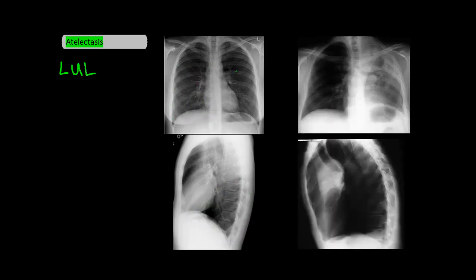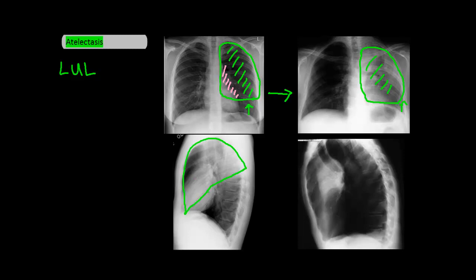Next we have the left upper lobe. On the PA, the normal left upper lobe dimension is here. With left upper lobe atelectasis, it's a little different than what we've seen before, because instead of a clearly visible shift in a fissure, we'll see a general area of increased opacity where the left upper lobe should be. You can also see silhouetting of the left heart border and mediastinum, and if you look closely, the left diaphragm is also elevated to fill in for the loss of volume in the left chest. On the lateral, the normal left upper lobe is here, and with atelectasis, the major fissure shifts inwards to make up for the volume loss.